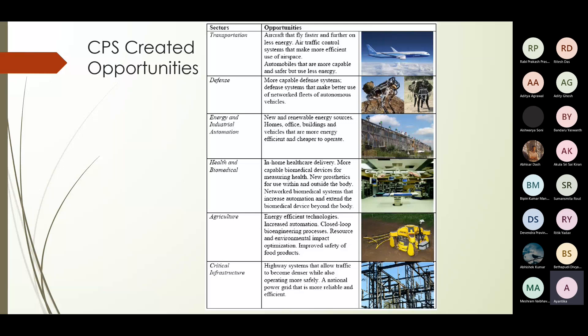In defense, when you are using CPS nodes for monitoring or for autonomous vehicles, synchronization and data confidentiality are very important. In industrial automation, we will take one example to see what the catastrophic effect may be. Similarly in healthcare, agriculture, and critical infrastructure like smart grid.